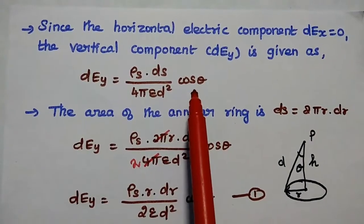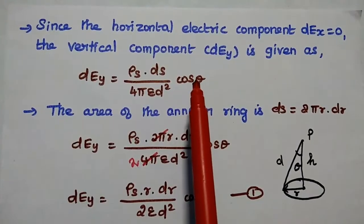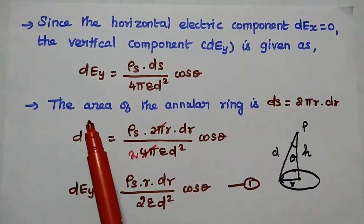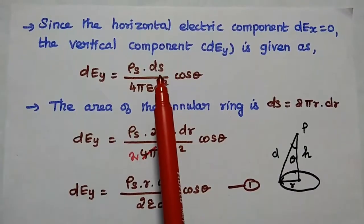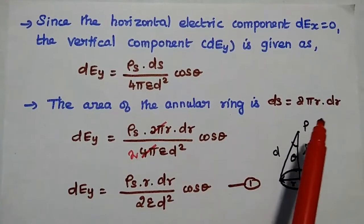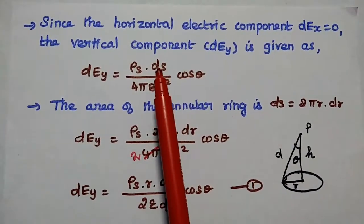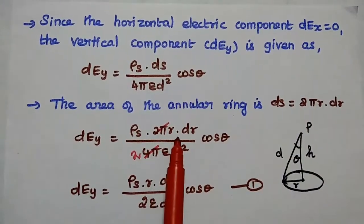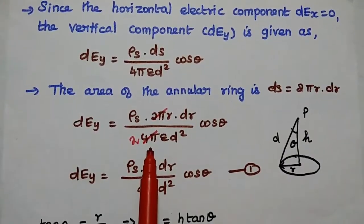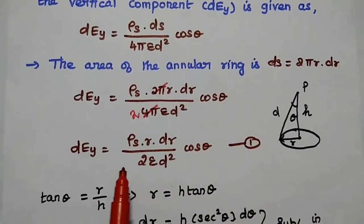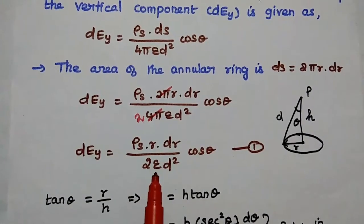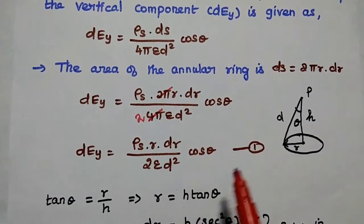Next, we substitute the value of ds. The area of the annular ring is ds = 2π·r·dr. Replacing ds with 2π·r·dr and simplifying, we get dEy equal to rho s · r · dr divided by 2·epsilon · d squared, multiplied by cos theta. Consider this as the first equation.